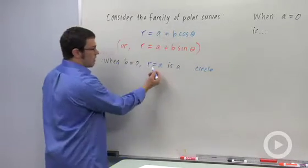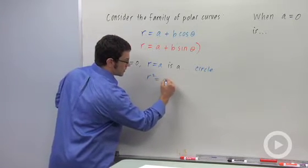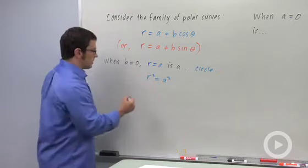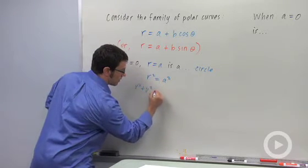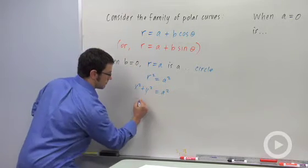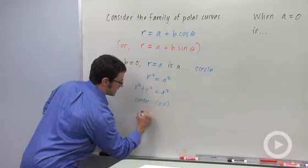It's easy to show that. Remember that r equals a - you could square both sides and get r squared equals a squared, and r squared when you're converting to rectangular is x squared plus y squared. So this is a circle centered at the origin and its radius is a.